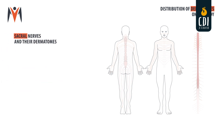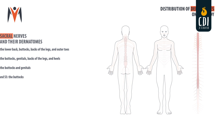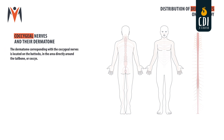Sacral nerves and their dermatomes. S1: the lower back, buttocks, backs of the legs and outer toes. S2: the buttocks, genitals, backs of the legs and heels. S3: the buttocks and genitals. S4 and S5: the buttocks. The coccygeal nerves and their dermatome: the dermatome corresponding with the coccygeal nerves is located on the buttocks in the area directly around the tailbone or coccyx.